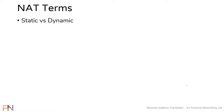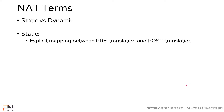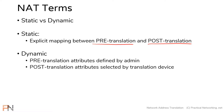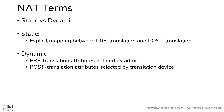The definition of a static translation is one where the administrator creates an explicit mapping between the pre-translation attributes and the post-translation attributes. By comparison, the definition of a dynamic translation is one where the pre-translation attributes are defined by the administrator, but the post-translation attributes are selected by the translation device. I'm going to show you examples of both of these to help illustrate these concepts.